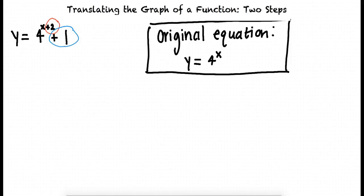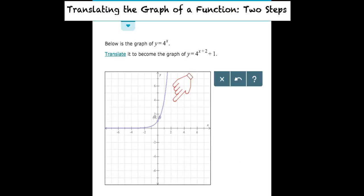Now we know that our graph of the equation y equals 4 to the power of x is going to be translated 2 units to the left and 1 unit up, to give us the new graph of the equation y equals 4 to the power of x plus 2 plus 1.